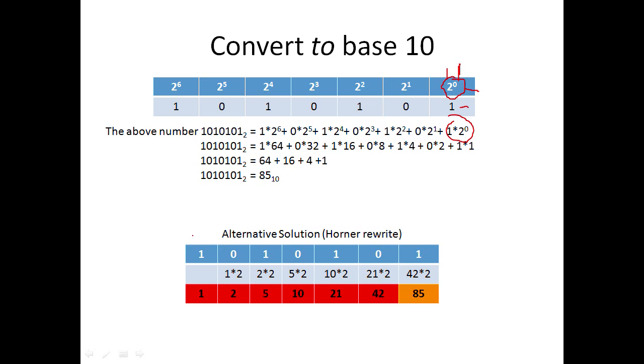Or you can use an alternative solution called the Horner rewrite. You write the number: 1, 0, 1, 0, 1, 0, 1. Then you take the first digit and drop it down. Then you multiply that by the base, so 1 times 2. Then you take the result, which is 2, and add it to the digit above it. So 0 plus 2 is 2.